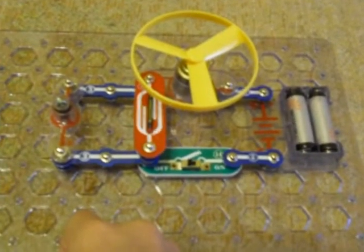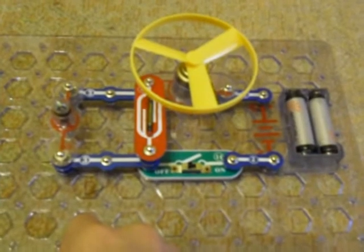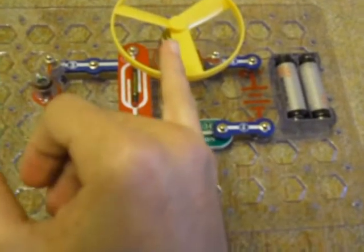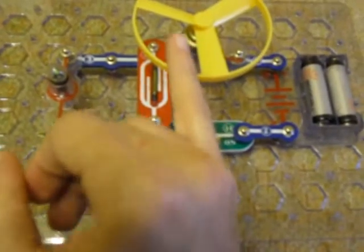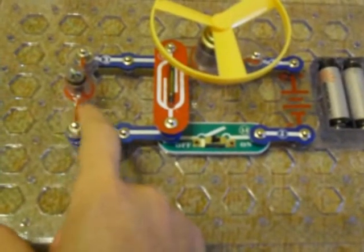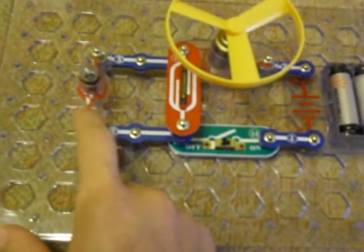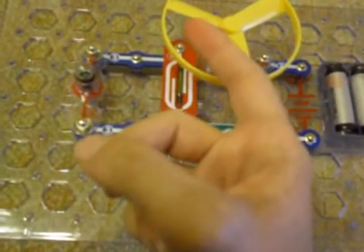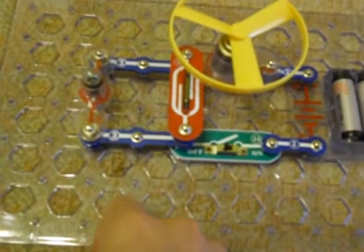And all current is going to be flowing through one element. Therefore, the bulb becomes brighter and the fan will run faster. Or in the first situation, the fan will run slower or get disconnected and the light bulb will get stronger.